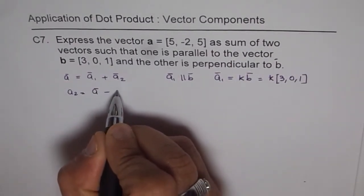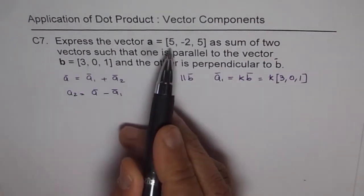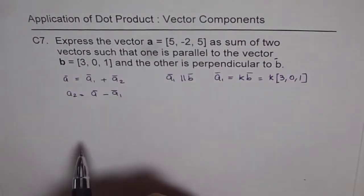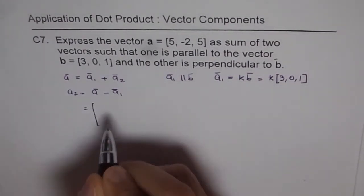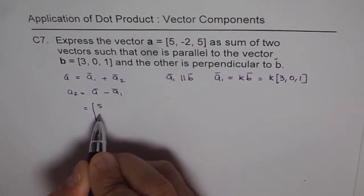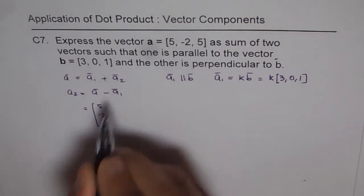Now if a₁ is this, then what is a₂? So a₂ should be equal to a minus a₁, vector a minus a₁. Vector a is given to us as [5, -2, 5], and a₁ is this vector.